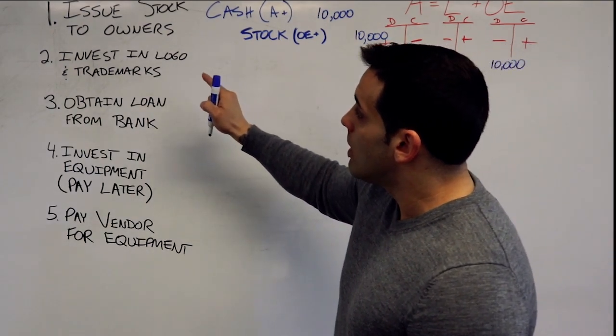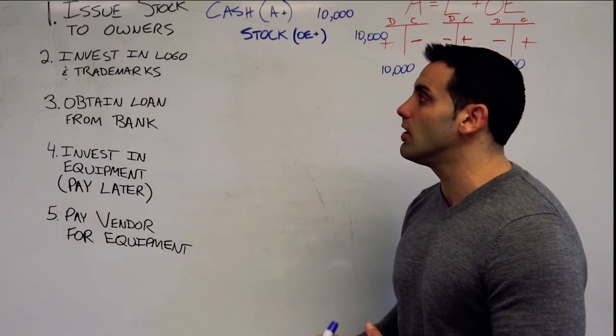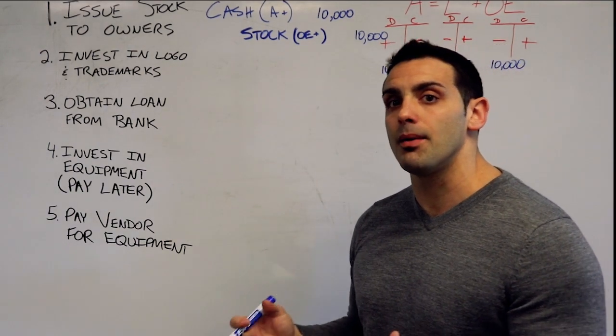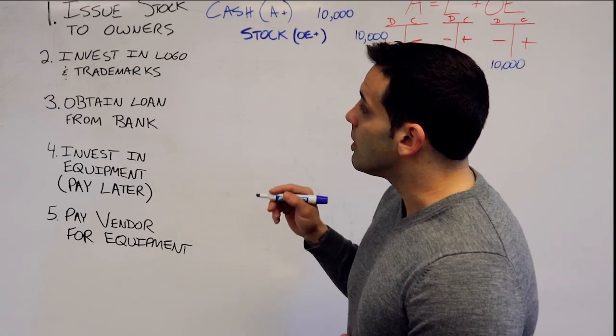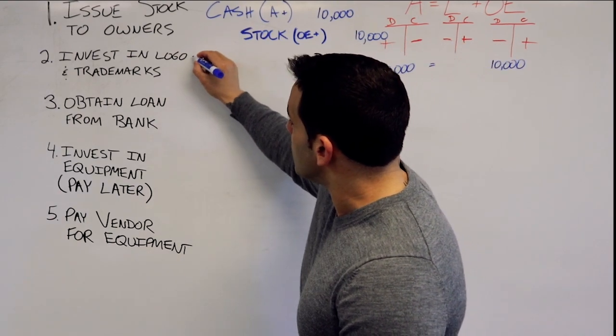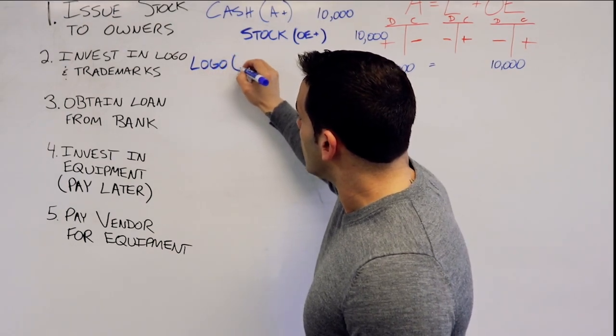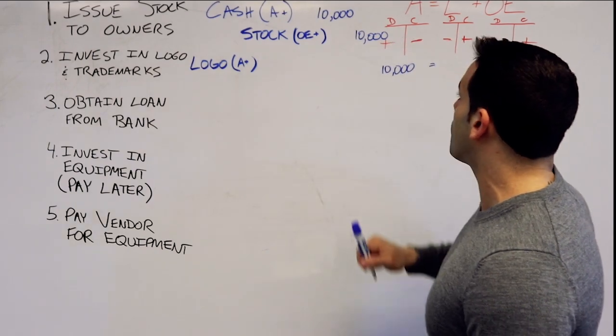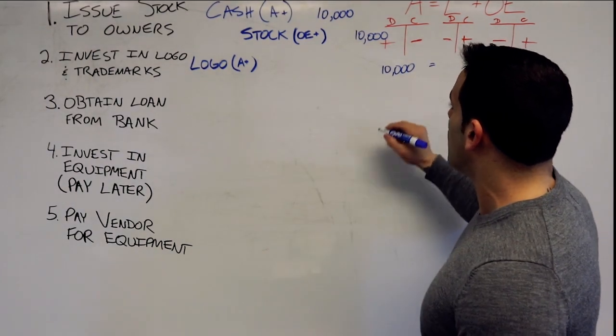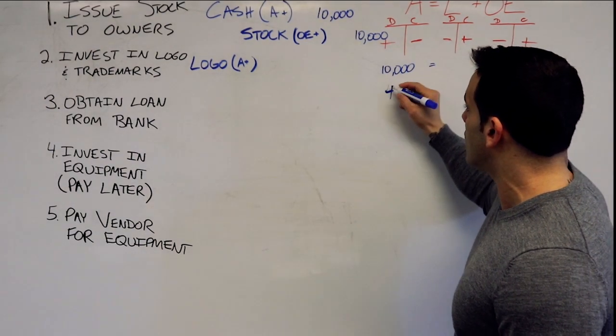Second one, the company invests in a logo and trademark, very common when you're starting a company. So the logo is also an asset, and we're also increasing that. So that, of course, will be a debit. Let's say we're paying $400 for our logo.